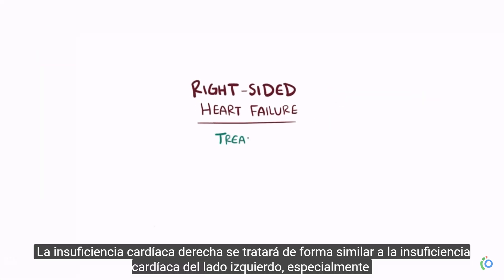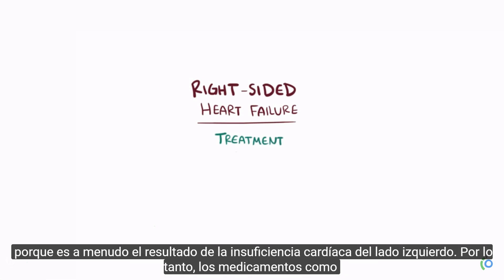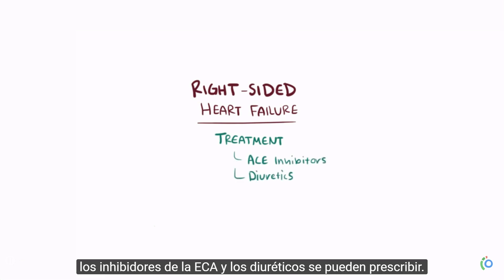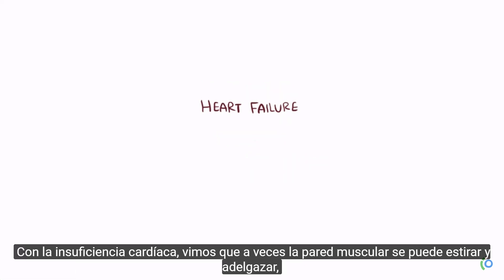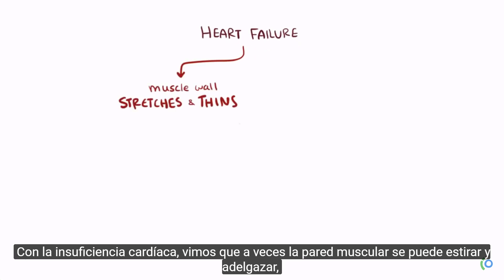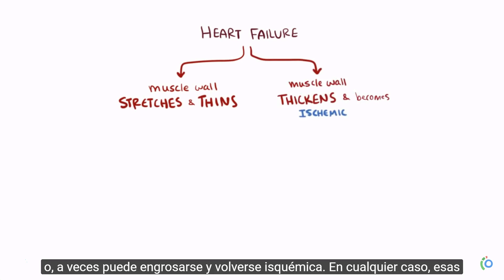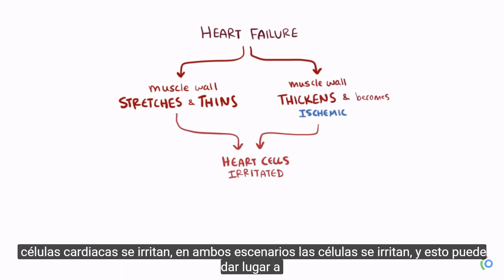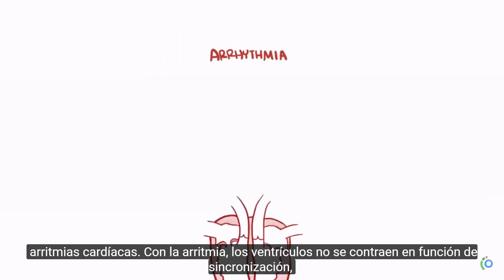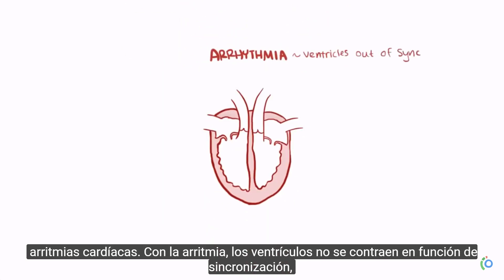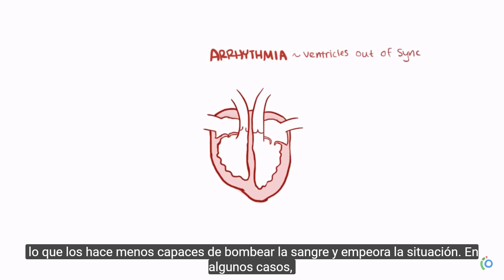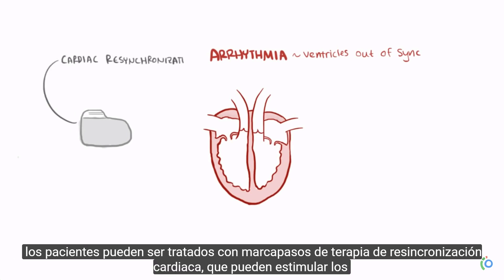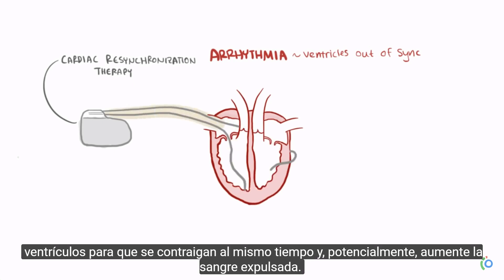Right-sided heart failure is treated similarly to left-sided heart failure, with medications like ACE inhibitors and diuretics. Heart failure can also cause the muscle wall to stretch and thin out, or thicken and become ischemic, irritating heart cells and leading to arrhythmias. With an arrhythmia, the ventricles don't contract in sync, making them less able to pump blood out. In some cases, patients may be prescribed cardiac resynchronization therapy pacemakers, which stimulate the ventricles to contract at the same time and potentially improve blood output.